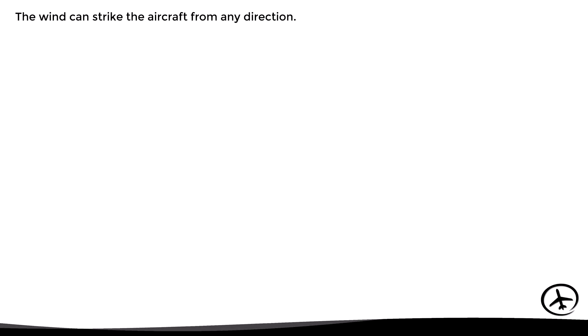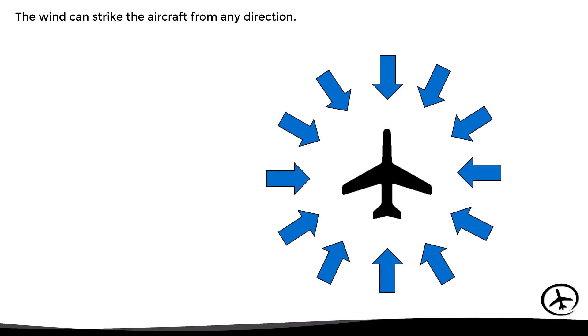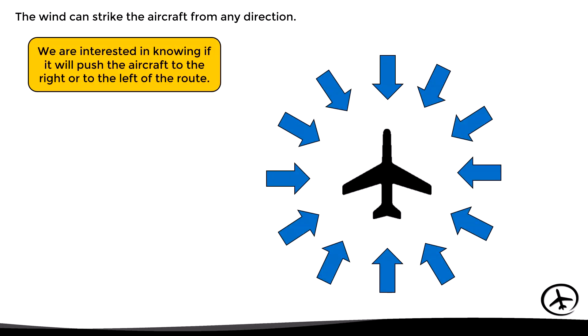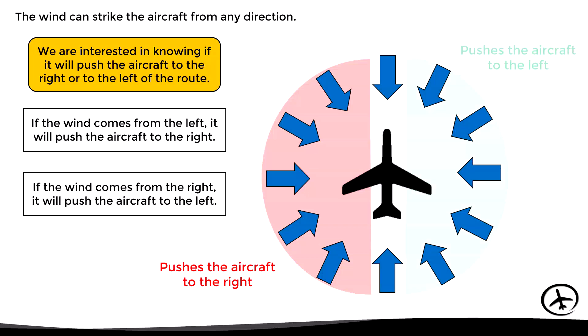The wind can strike the aircraft from any direction. We are only interested in knowing if the wind will push the aircraft to the right or to the left of the route. If the wind comes from the left, it will push the aircraft to the right; if it comes from the right, it will push the aircraft to the left. In the event of a direct headwind or tailwind, it will affect ground speed but not the track, so the aircraft will remain on course.